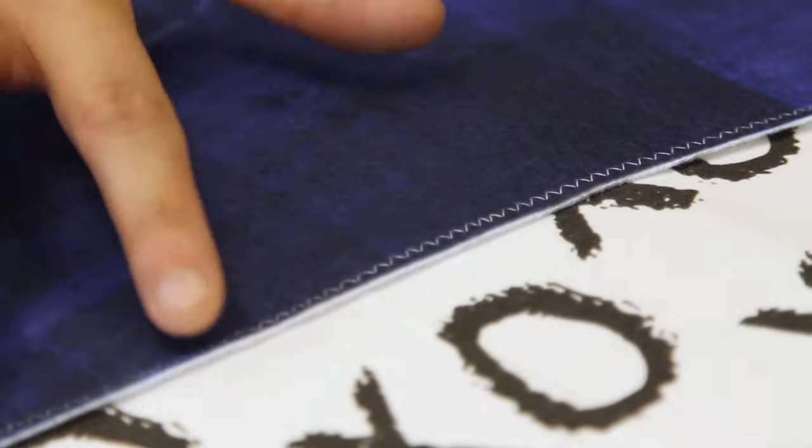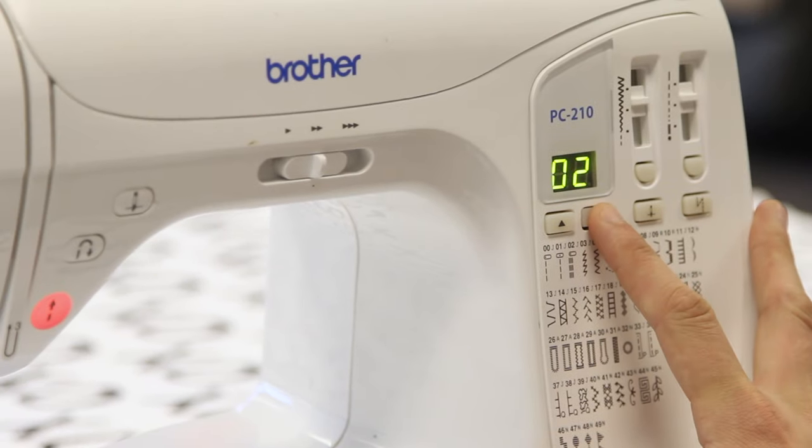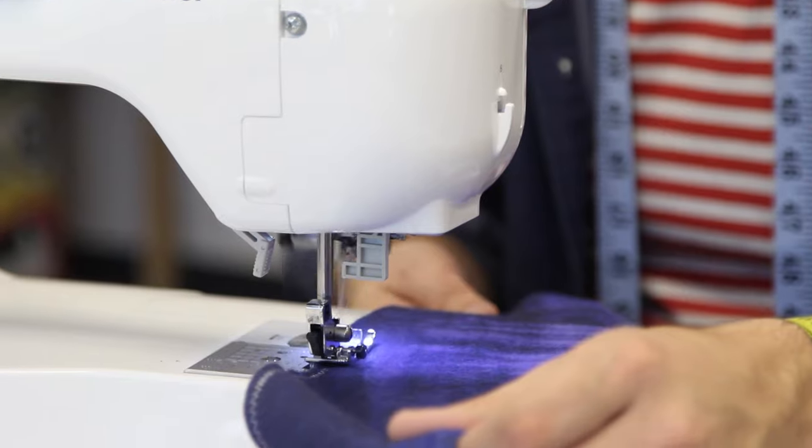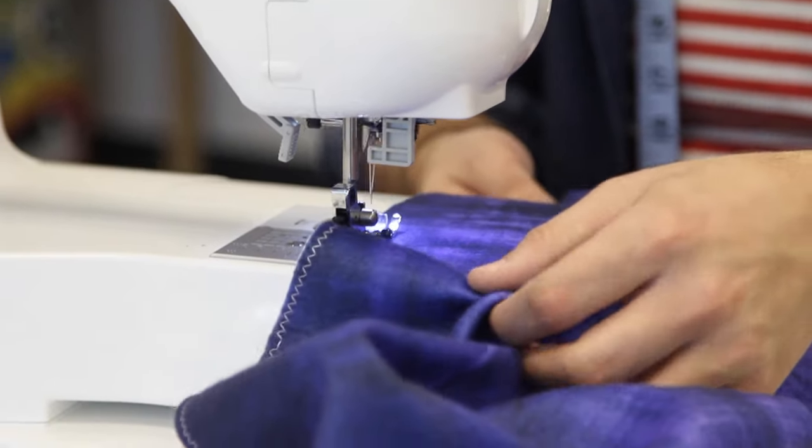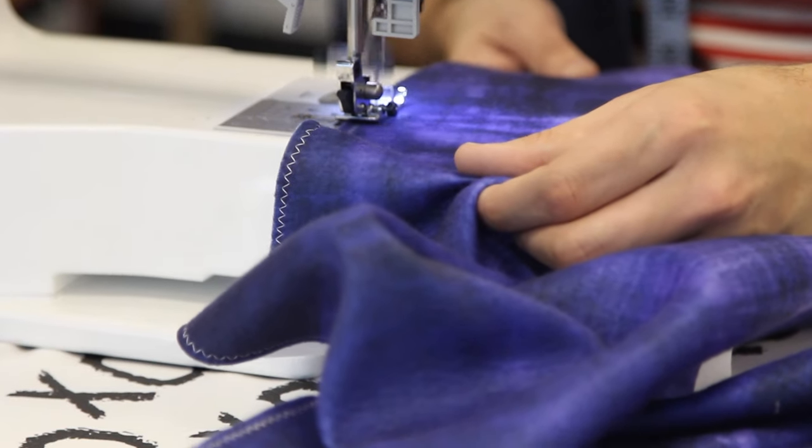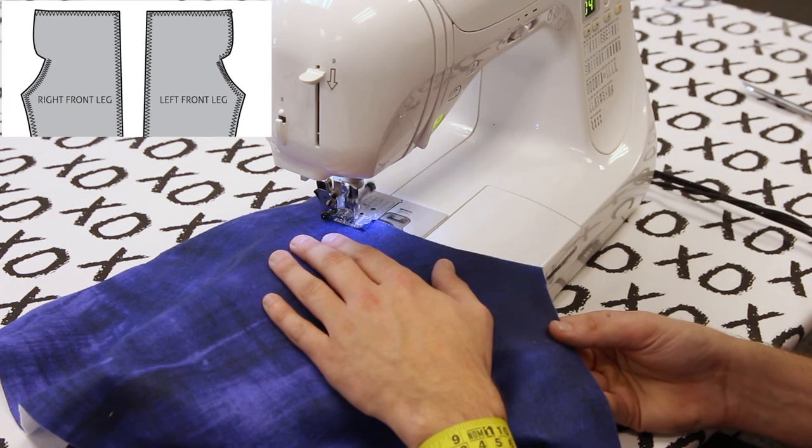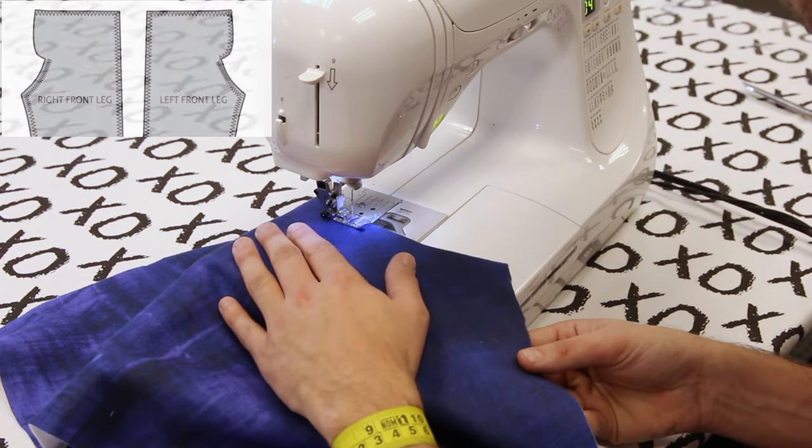We want our pants to look and feel professional, so we're going to edge finish the seams. We're going to zig-zag stitch, but you can use a serger as well. Go ahead and edge finish the side seams, the crotch seams, and the inseam. Only edge finish the fly on the left pant leg. Leave the fly on the right leg alone.